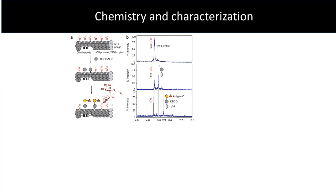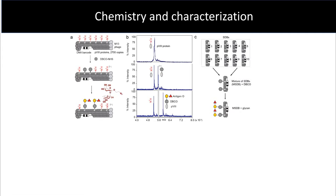We first functionalize the phage particles with dibenzyl cyclooctyne NHS ester (DBCO-NHS ester), which functionalizess the N-terminus of the P8 coat protein, followed by ligation of glycans that have an azidoalkyl linker. Quality control of this ligation is done using MALDI-TOF mass spectrometry. The peaks seen are not from a single clone of phage, but a mixture of 10 phage clones, each with a unique DNA barcode. Since it's a mixture of silent DNA barcodes, I call them MSDDs.